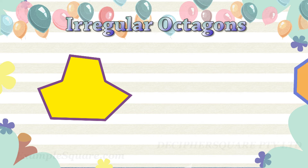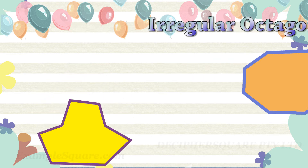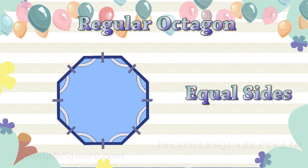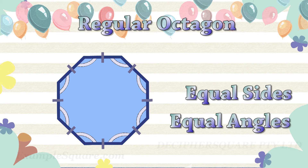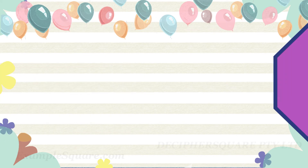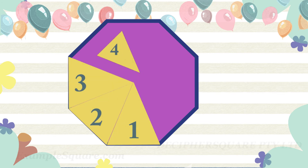These are some examples of irregular octagons. This is a regular octagon. A regular octagon can be split into eight identical isosceles triangles.